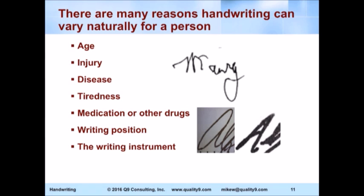Disease — people get ill, other things happen. We'll see a situation later where there's a lot of tremor in the writing, and that's because when I was doing the examination, we went up to the hospital to look at the hospital records to get the exemplars. In those hospital records, it talks about the drugs he was on, and one of the side effects of one of those drugs was tremor. So was it strange that there was tremor in his writing? No.